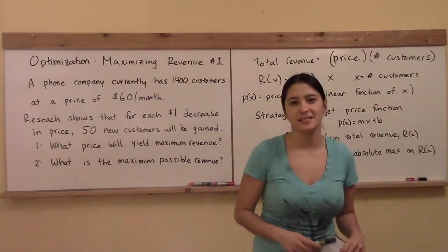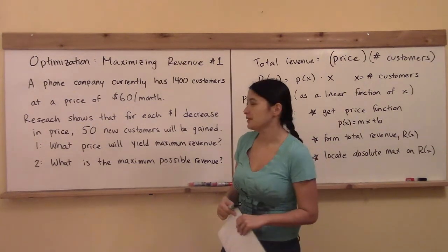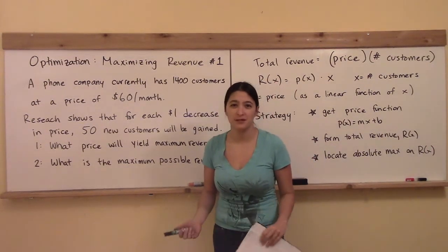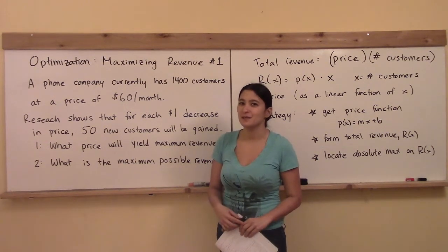Our first example in optimization is going to be an example of maximizing a total revenue function. The hard part of this is going to be forming the total revenue function, and then the calculus, hopefully you'll feel by now, is the easy part.